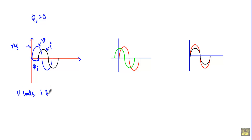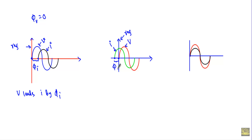Now consider another case where the red waveform indicates voltage and the blue waveform indicates current. The origin of the voltage is at the zero reference point. The origin of the current is φi degrees ahead of the origin of the voltage. Therefore, current i leads voltage v by an angle φi.